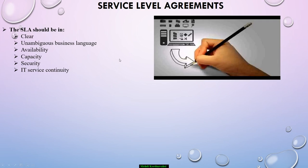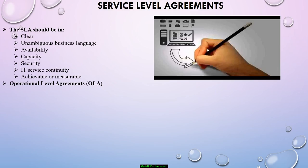Let's get back to the Operational Level Agreement. An OLA is an agreement between an IT service provider and another part of the same organization — for example, between teams within the IT department. An OLA supports the IT service provider's delivery of IT services in accordance with the SLA to the customer. And now you are among friends, so you can talk technical.